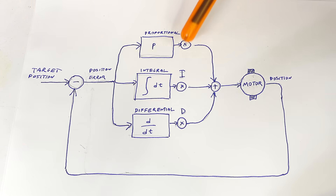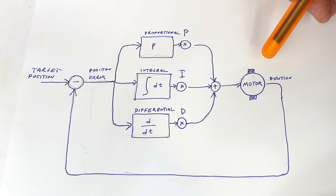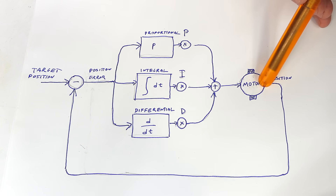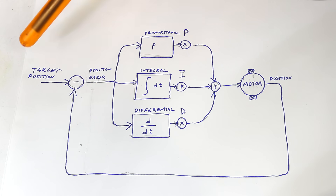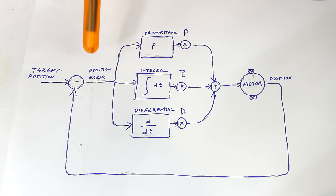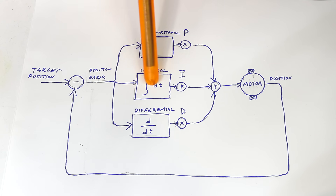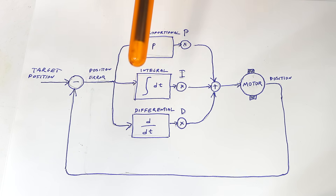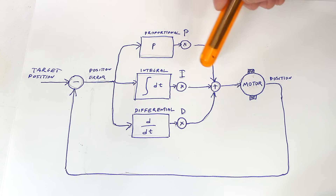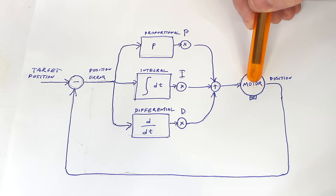I often get comments on my videos saying just use a PID controller. But what is a PID controller? PID stands for proportional, integral, and differential, and it's typically used in a control loop for controlling motors. We read the motor's position, compare it to the target position, which gives us a positional error. That error is fed into the proportional block (which multiplies it by a constant), the integral block (which accumulates the error), and the differential block (which looks at the rate of change of the error). We multiply those by their respective P, I, and D terms, add them up, and use that as the input signal to the motor.